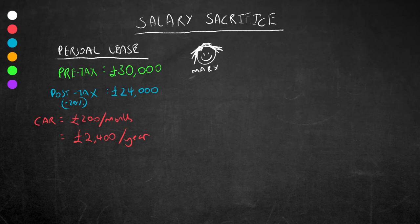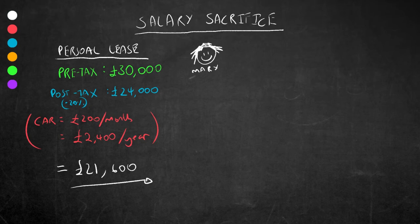She takes out a personal lease on it and that means that her post-tax income of £24,000 minus £2,400 a year in leasing, she is left with £21,600. So that's what traditionally has happened.